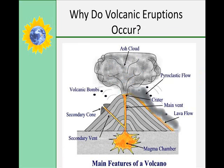Volcanic eruptions occur for a lot of different reasons. One of them is the high temperatures of the earth's interior. The melting of the lower crust and mantle equals molten rock, which equals magma. At depths greater than 20 kilometers, the temperature is 800 to 1,600 degrees Celsius, and the density of the magma is less than that of the crustal rock, and therefore it's going to rise to the surface.